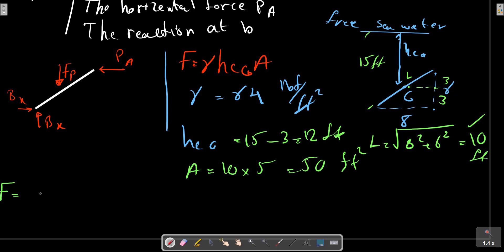So we can calculate F equals to gamma multiply by hcg which was 12, and A which was 50. F equals to 38,400 pound force. This is the magnitude of the force on the plate.